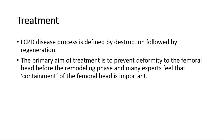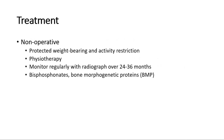Perthes disease is defined by destruction followed by regeneration, and the primary aim of treatment is to prevent deformity to the femoral head before the remodeling phase. Non-operative conservative treatment is usually reserved for younger children, especially those under 6 years old, with Herring A or B hips. Therapies include protected weight-bearing and activity restriction, physiotherapy, and regular X-ray monitoring over 2 to 3 years. Medications such as bisphosphonates and bone morphogenetic proteins may be given, though their use remains controversial.